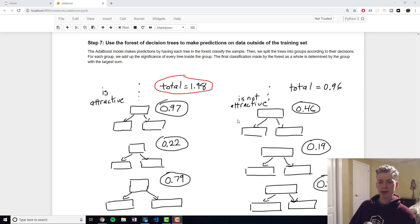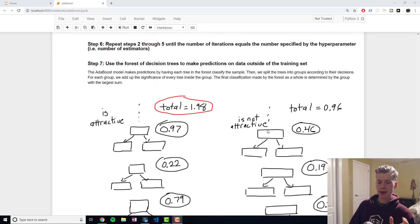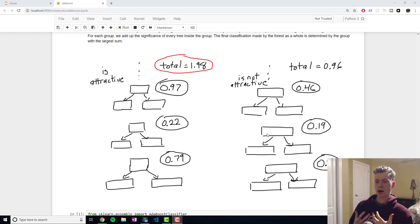The last step, once our model is completely trained, is we are going to make predictions on the test set or data outside of the training set. The way we do that is we take each of our decision trees, each with its own significance, and we get them to classify the data. Depending on the label you're trying to predict—in our case it's just a binary label, so you're either attractive or not—we'll end up with two groups. But it's possible that you end up with more groups. Essentially all the trees make a prediction, and then you add up the significance of all the trees in the same group.